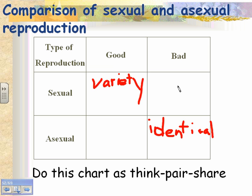The bad thing about sexual reproduction is that you have to find a mate — it's time consuming. You only give your babies half of your DNA. It can also be dangerous: a firefly shining its light is a good way to attract a predator, and a male peacock's long, beautiful tail feathers attract females but also make it easier for predators to catch them. The good thing about asexual reproduction is that it's fast — you don't need a partner and can make babies all by yourself.